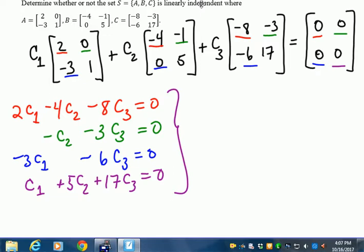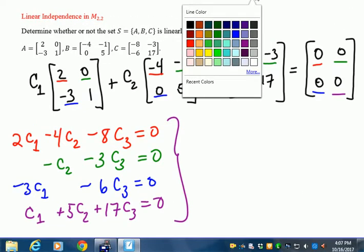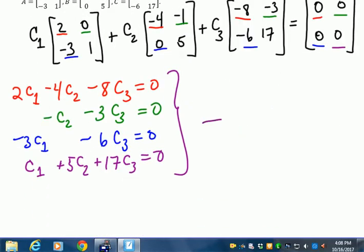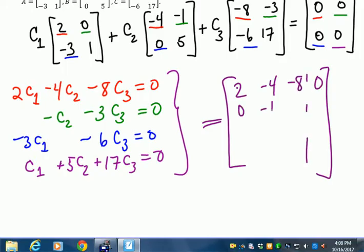And you guessed it, what we're going to do is convert this into an augmented matrix. My system of equations here I got from the definition of linear independence. So here's what we get: [2, -4, -8 | 0], [0, -1, -3 | 0], [-3, 0, -6 | 0], [1, 5, 17 | 0].